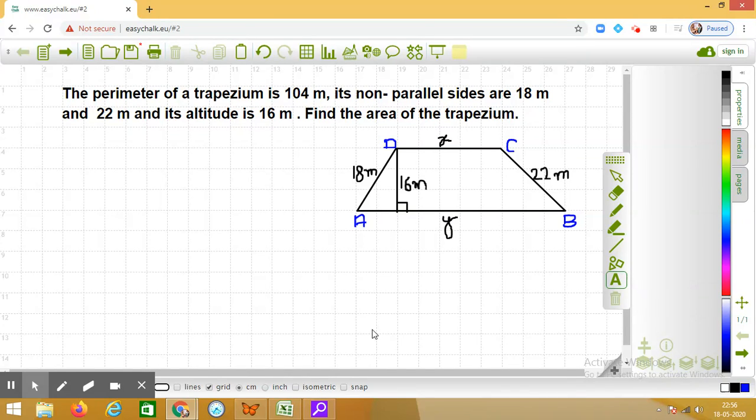Okay, dear students, today we are going to discuss this question. The perimeter of a trapezium is 104 meters. Its non-parallel sides are 18 meters and 22 meters, and its altitude is 16 meters. Find the area of the trapezium.